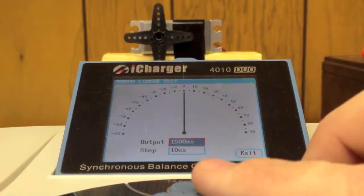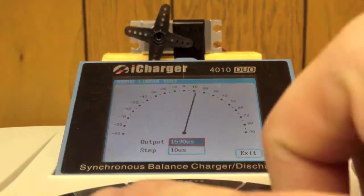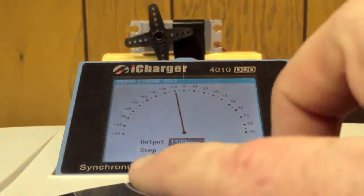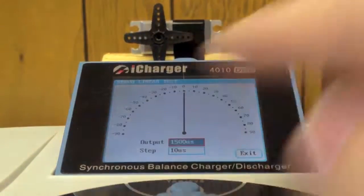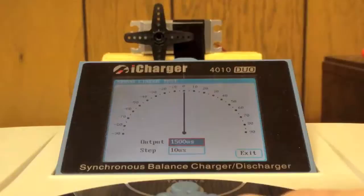This is great for centering your servos if you're setting up a CCPM helicopter or installing some servos in an airplane and you want them centered so that you can find the right horn and spline orientation. So come out of the screen now and come over to fixed point test.